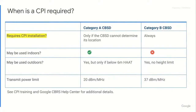So when is a CPI required in the CBRS ecosystem? Essentially it boils down to this: a Category A CBSD does not require CPI certification or validation. They don't have to look at any Category A CBSDs, with one exception — that is, if the CBSD can't determine its latitude and longitude. If that's the case, then it has to be signed by a CPI.